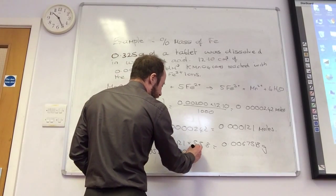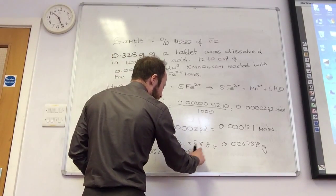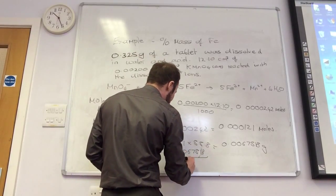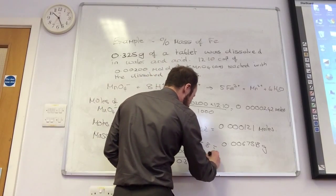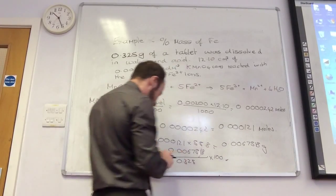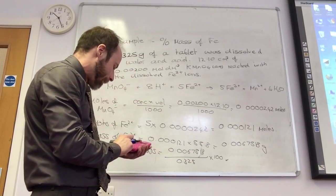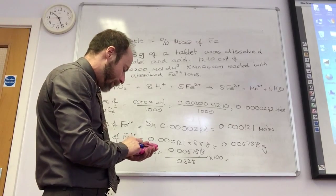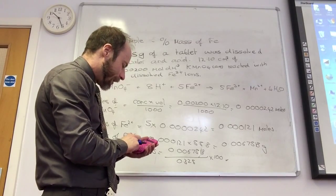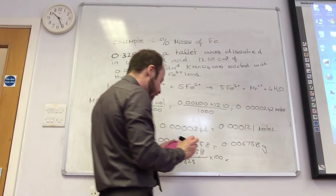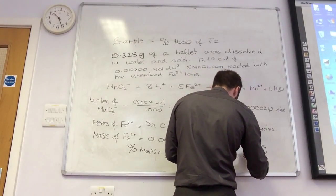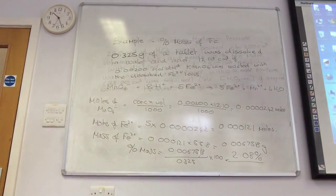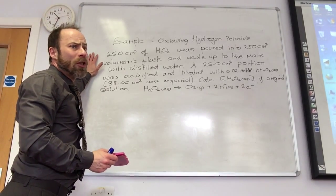So 0.067518 divided by the original mass, which was 0.325 times it by 100. And I reckon that gets me to 2.08% of iron in the tablet. So this is a type of question you may be given.